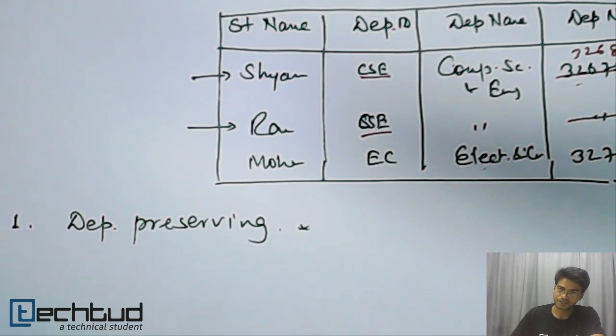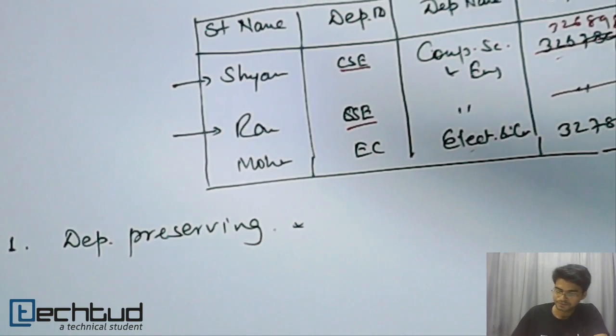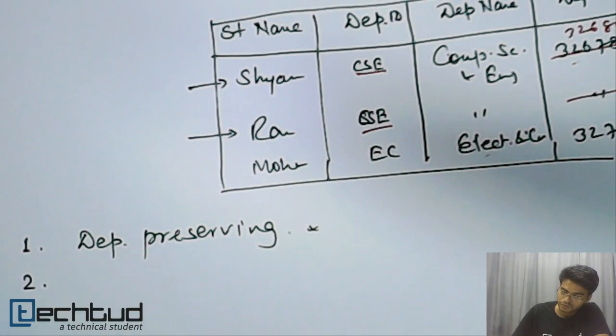Whatever dependency - functional dependency - we had in the base table, that should be there existing for the derived tables which has been derived after decomposition.